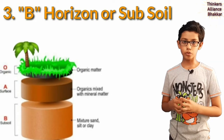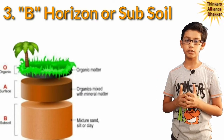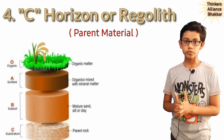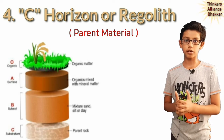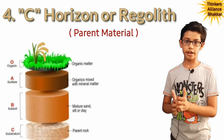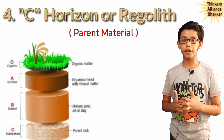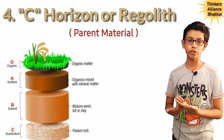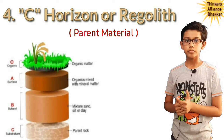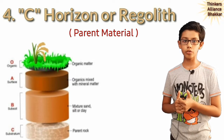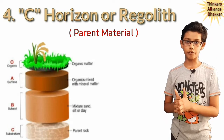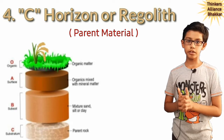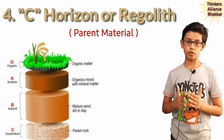Only roots of big plants can reach here. Number four, C horizon or regolith. C horizon is also called regolith and parent material. It is known as the parent material because the other layers on top of the C horizon are developed from this layer. C horizon is made up of large solid rocks.